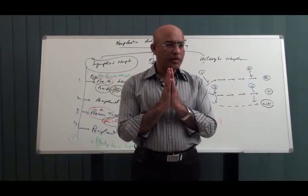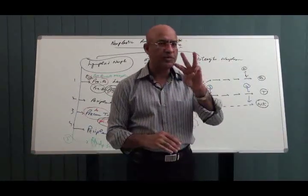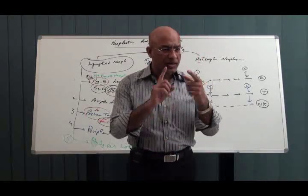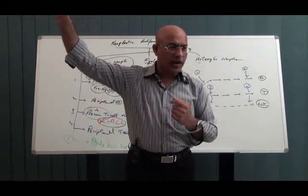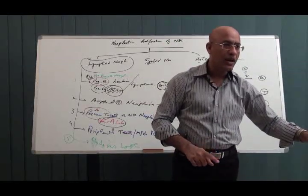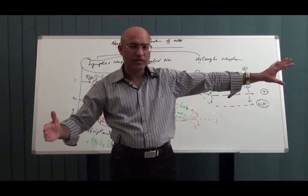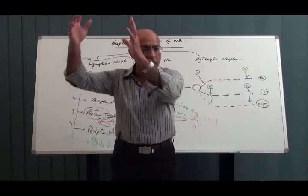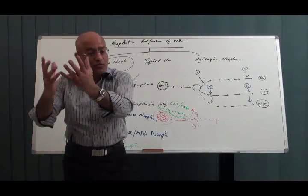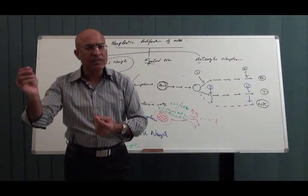WHO has said that neoplasia or neoplastic proliferation of white blood cells should be divided basically into three basic categories. What are these three basic categories? Lymphoid neoplasia, myeloid neoplasia, histiocytic neoplasia. Right now we go into detail of lymphoid neoplasia. Myeloid and histiocytic will be discussed later.